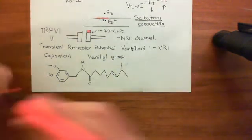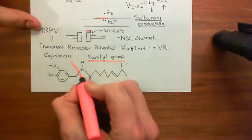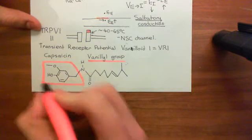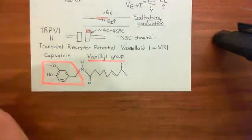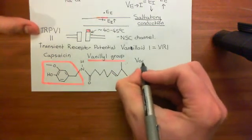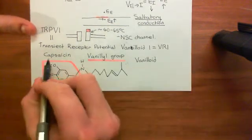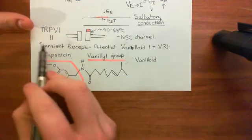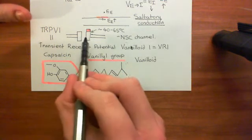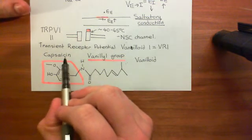The vanillyl group — the portion after which the capsaicin molecule is called a vanilloid — is this group that I'm now circling in red. Any molecule which has this vanillyl group is called a vanilloid, so capsaicin is an example of a vanilloid. That's why this receptor was originally called the Vanilloid Receptor 1 — it was the first receptor identified as the means by which capsaicin works.